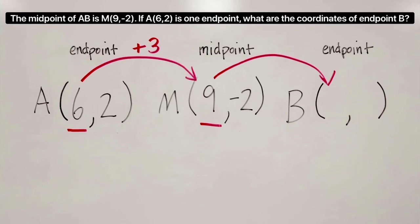So if I add 3 to 6 to get to 9, well, then to go from that midpoint to the other endpoint, remember, I've got to do the same thing. So I'm going to add 3 to that value, and that'll get me to my endpoint, which has an x value of 12.